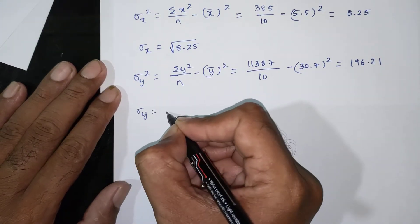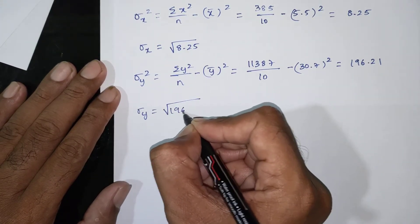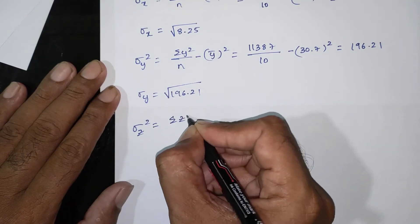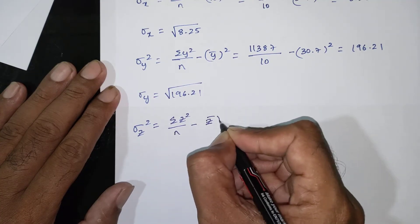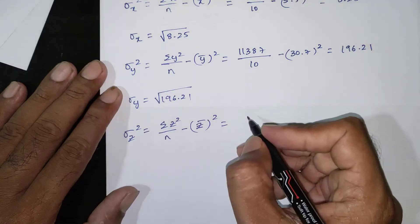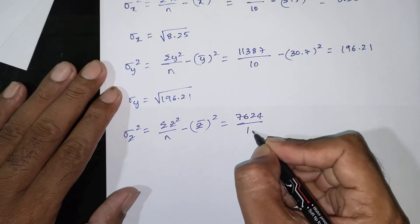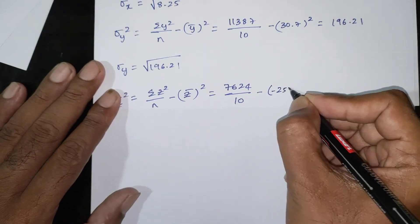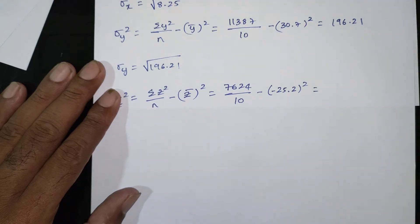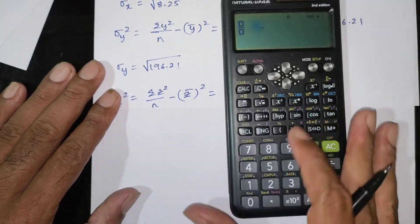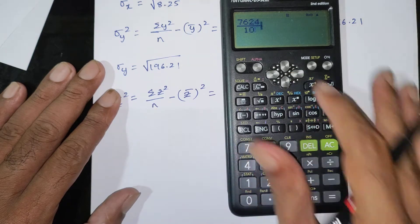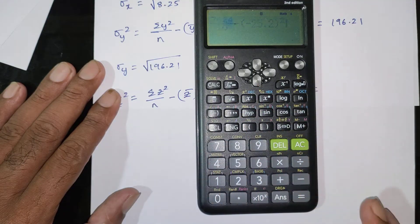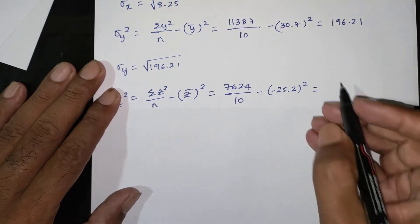Sigma y = root of 196.21. Sigma z square formula: summation of z square divided by n, minus z bar whole square. Summation of z square = 7624, divided by 10, minus (minus 25.2) whole square = 127.36.